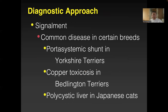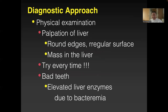Signalment helps you think about common diseases in certain breeds. For example, portosystemic shunt in Yorkshire Terrier, copper toxicosis in Bedlington Terrier or any terrier group, polycystic kidney and polycystic liver in Japanese cats. Physical examination — palpation of the liver, checking for round edges or irregular surface, or a palpable mass. If you do it every time, you'll develop a good feel for it. Don't skip the physical exam.